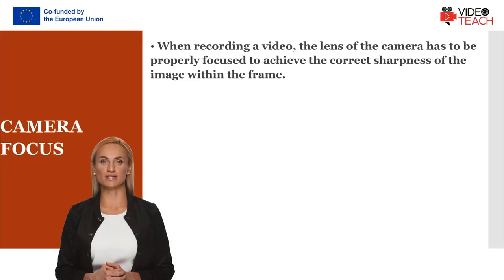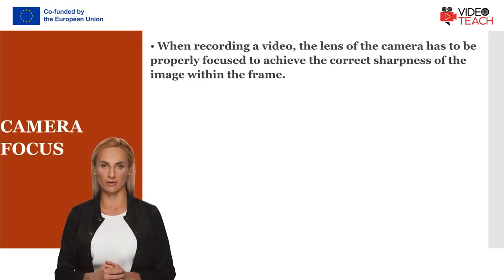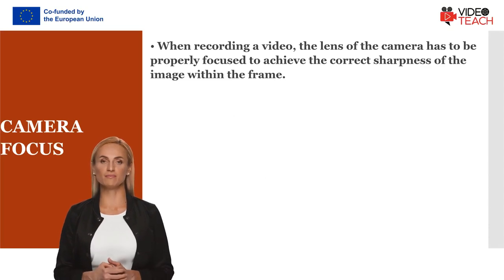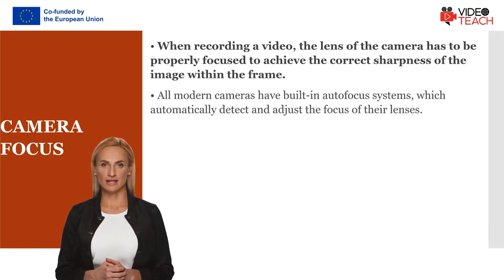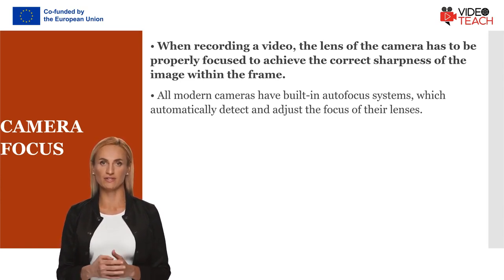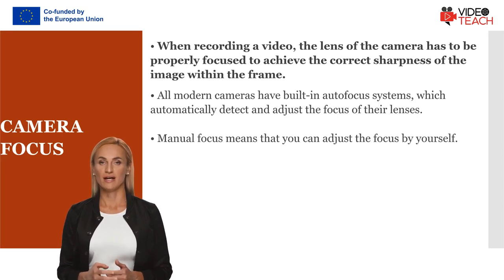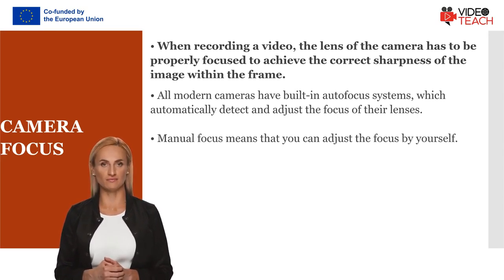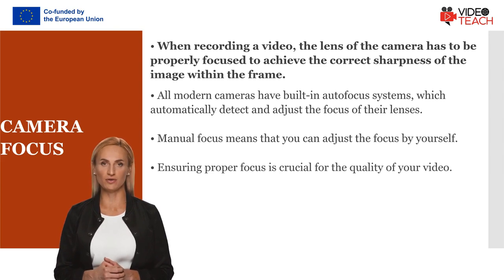When recording a video, the lens of the camera has to be properly focused to achieve the correct sharpness of the image within the frame. All modern cameras have built-in autofocus systems which automatically detect and adjust the focus of their lenses. Manual focus means that you can adjust the focus by yourself. Ensuring proper focus is crucial for the quality of your video.